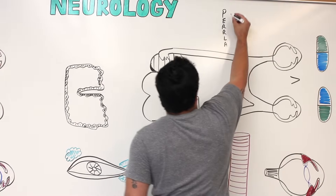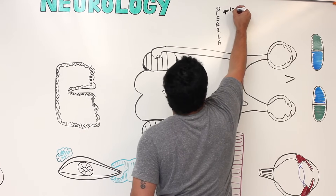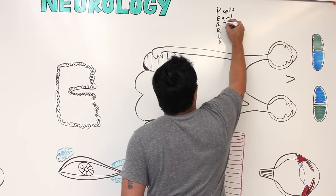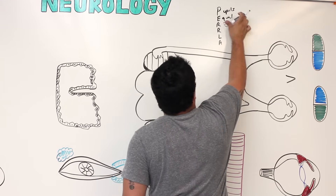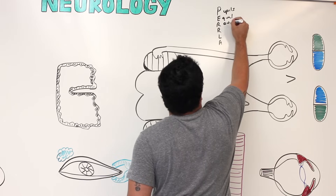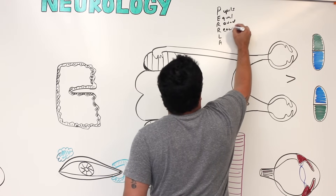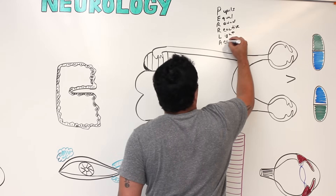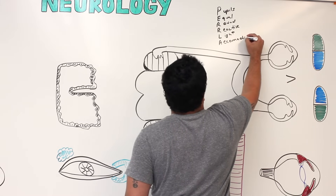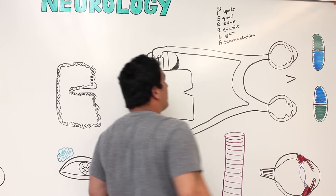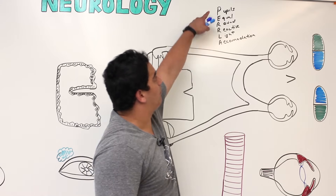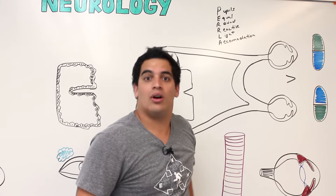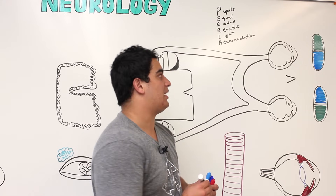PERLA stands for: pupils are equal, round, and reactive to light, and able to perform accommodation. These are the things doctors are looking for when they shine a light into someone's eye.